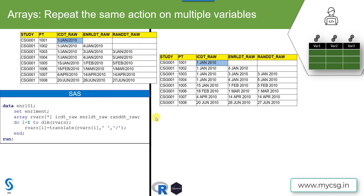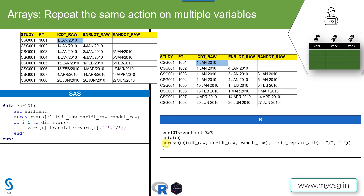To replicate this in R Tidyverse, we use the across function within the mutate function. We create a dataset named enrl01 from the enrollment data and pass it to the mutate function, which can create or modify existing variables. Within the mutate function, we use the across function, which takes two arguments: the first is the list of variables, and the second is the function to apply on those variables. We need to use the tilde symbol so the function gets applied to all three variables.